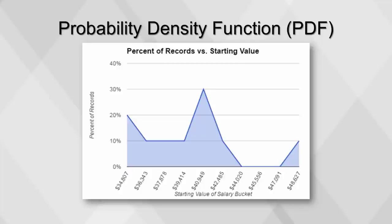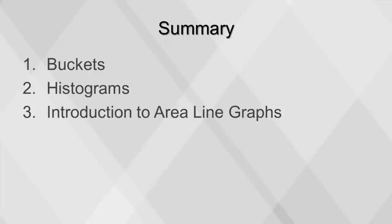If we change the visualization to an area line graph and change the vertical axis to the percent of records by dividing the count by the total number of records, the result is similar to what is known as a probability density function, or PDF. This is commonly used in statistics to estimate the probability of a new value. The shaded area under the curve adds up to 1 or 100%, and the lines are typically much smoother than in this example, as most PDFs visualize more than 10 data points and use more than 10 buckets. This concludes our video on distribution visualizations.